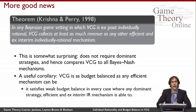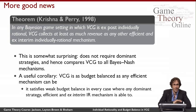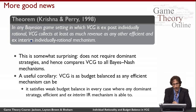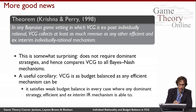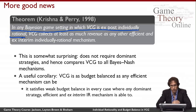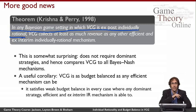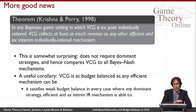Here's a theorem from Krishna and Perry with even more encouraging news about VCG revenue. Consider any Bayesian game setting in which VCG is ex post individually rational. The claim is that VCG collects at least as much revenue as any other efficient and ex interim individually rational mechanism. The preamble just means: don't worry about how you got there — think about any setting where VCG is ex post individually rational, including the conditions we discussed but also other settings.